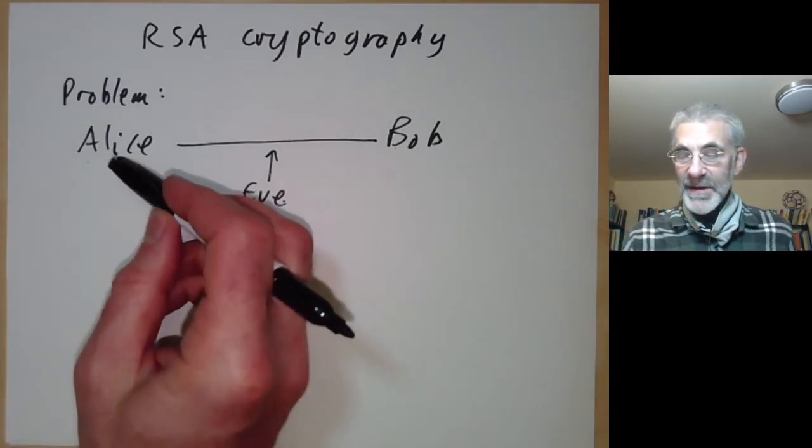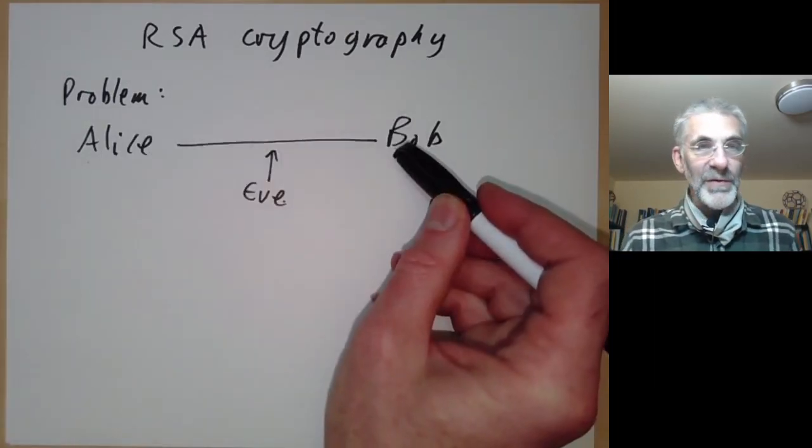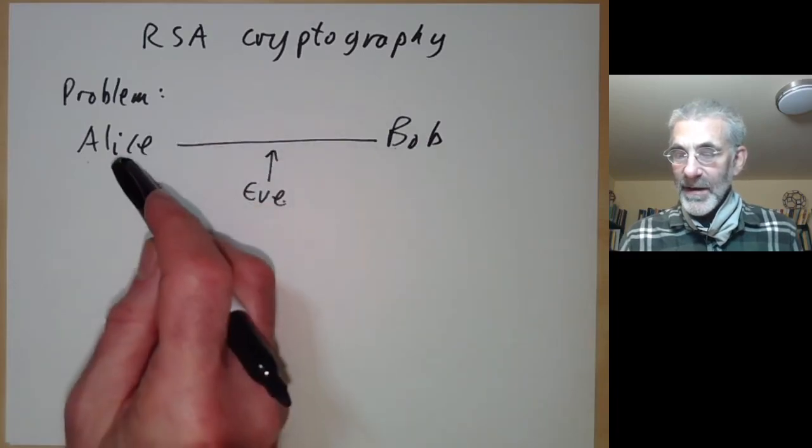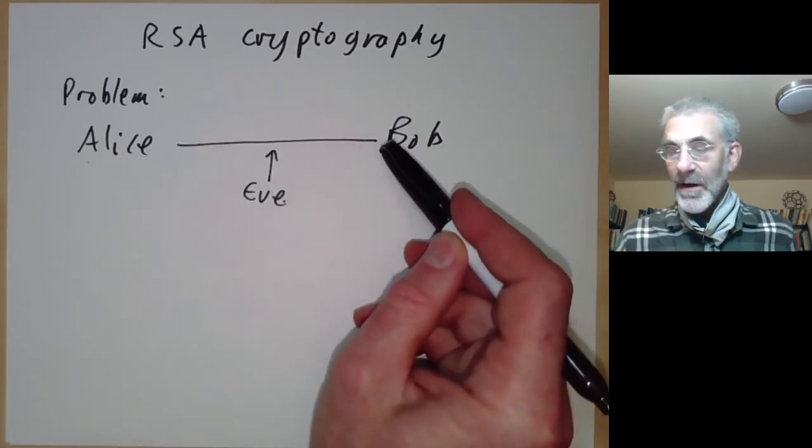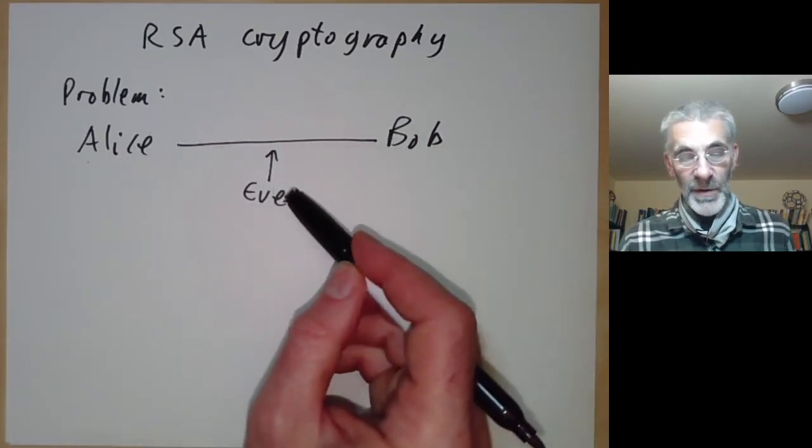For example, Alice might be you and Bob might be the owner of some internet store. Alice is sending her credit card number and doesn't want Eve to know what it is.